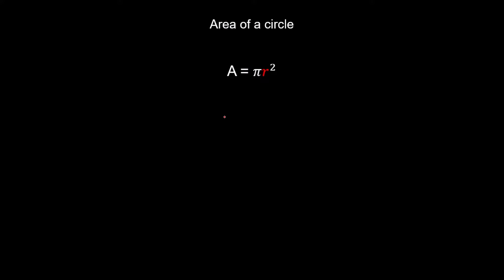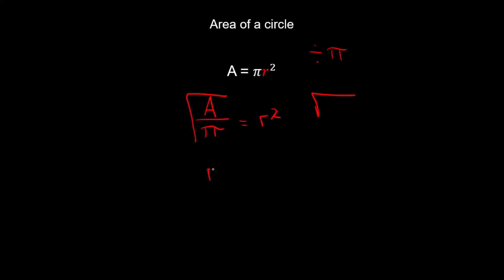You'll recognize this formula from year seven: area equals pi r squared — the area of a circle. I want to find r. First, pi is a multiplier, so I do the opposite and divide by pi: A divided by pi equals r squared. Now I need r, so I do the opposite of squared, which is finding the square root. Square-rooting both sides gives r equals the square root of A divided by pi.